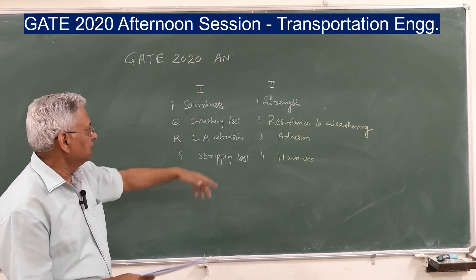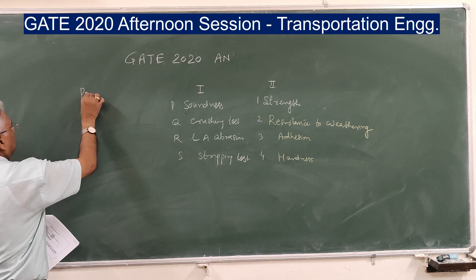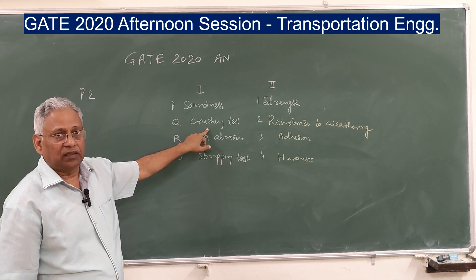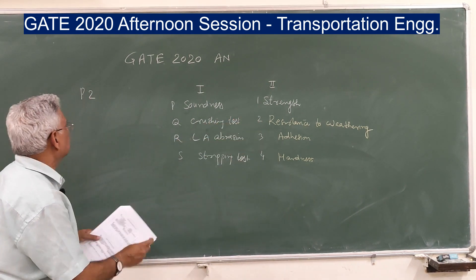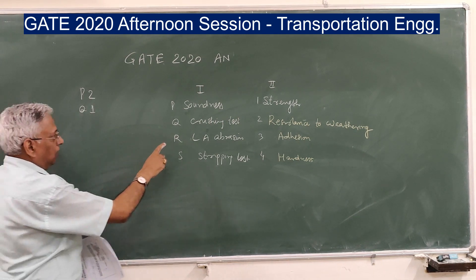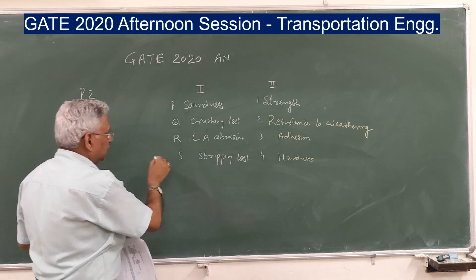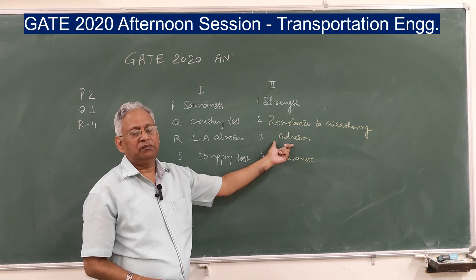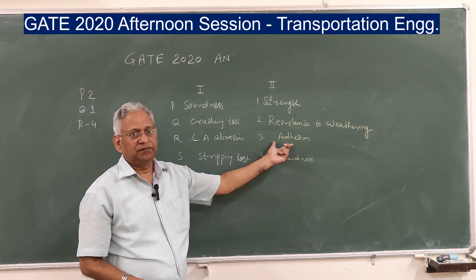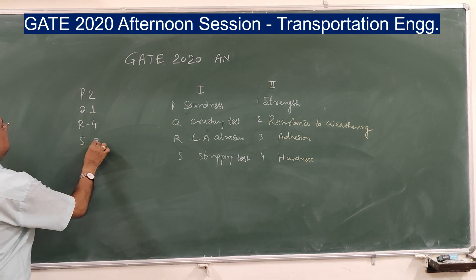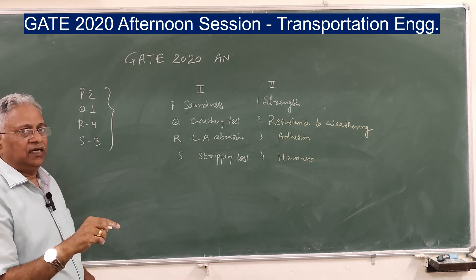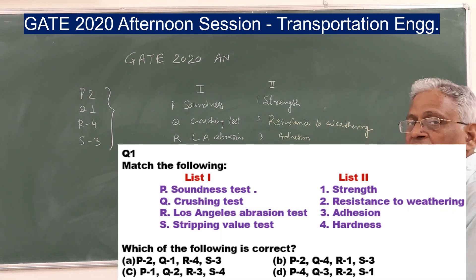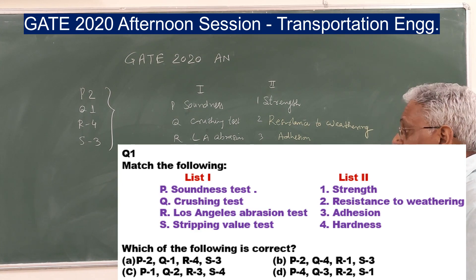The soundness test is conducted to determine resistance against weathering, so P is related to 2. Crushing test is done on aggregate to determine mechanical crushing strength, so Q is 1. Los Angeles abrasion value gives you the hardness of aggregate, so R is 4. Stripping test gives you the adhesion property between aggregate and the binder, so S is 3. The correct answer is option A: P2, Q1, R4, S3.